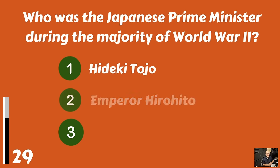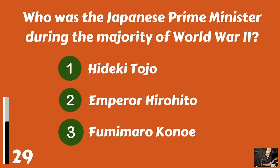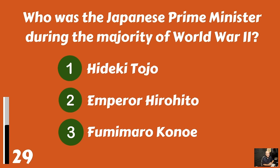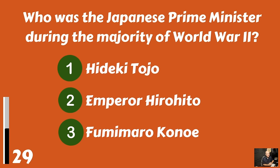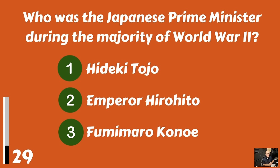Who was the Japanese prime minister during the majority of World War II? Hideki Tojo? Emperor Hirohito? Or Fumimaro Konoe?